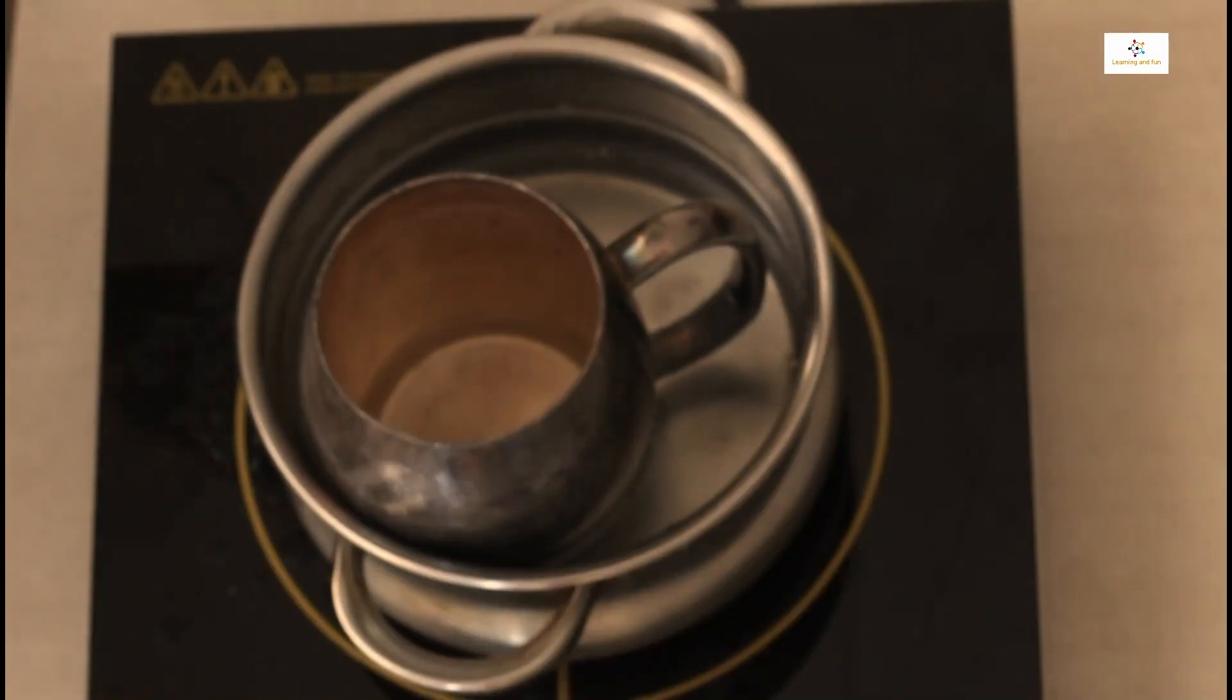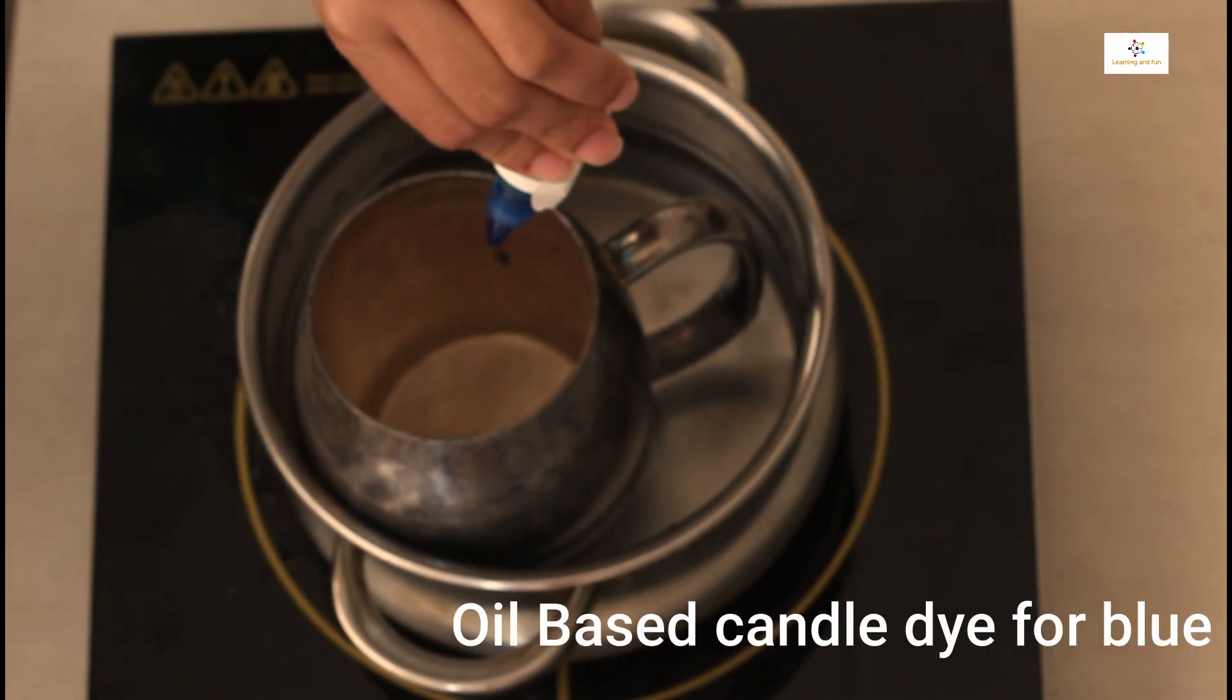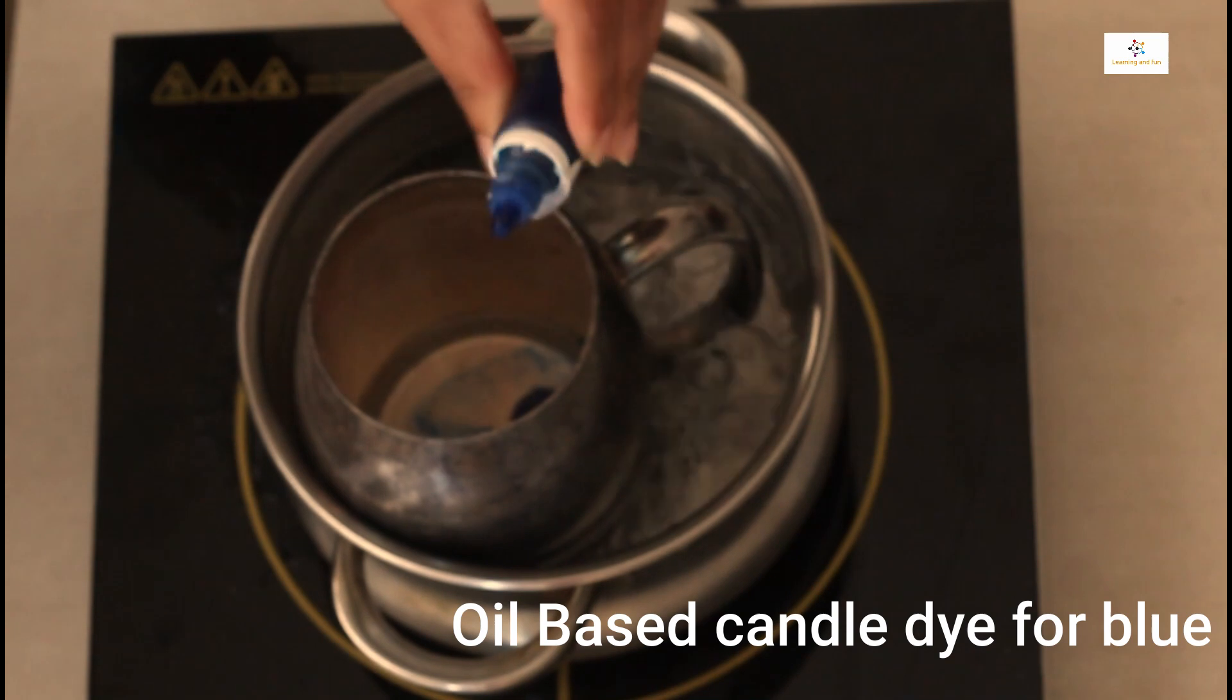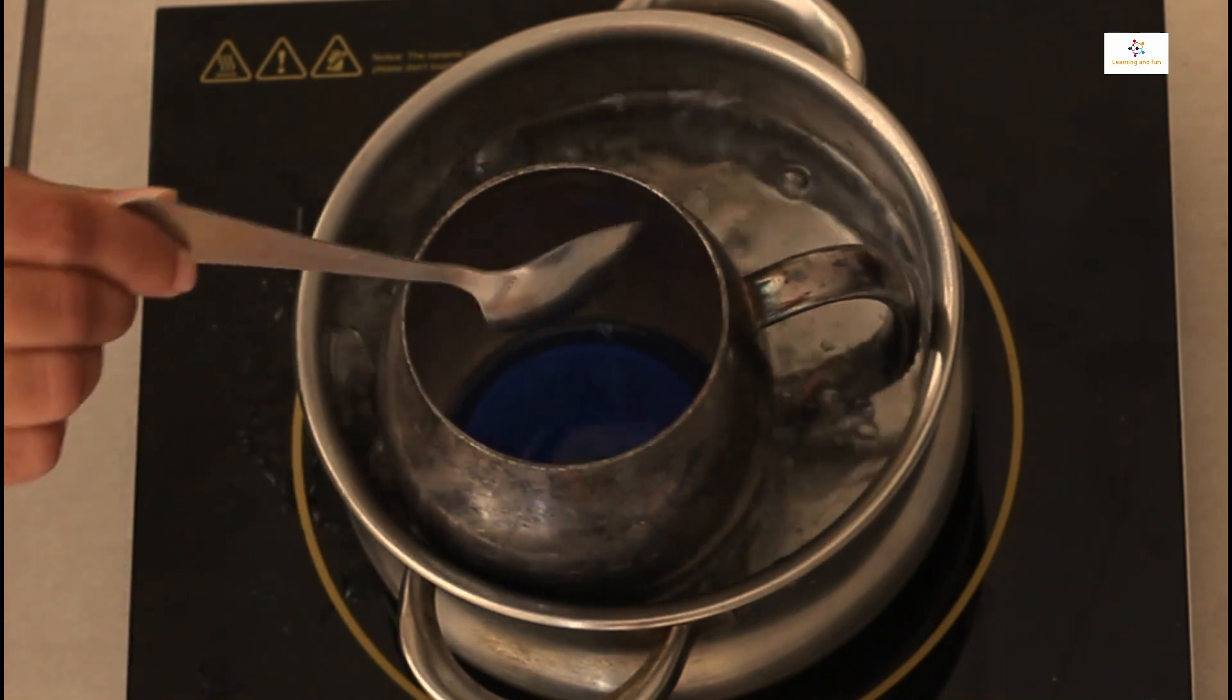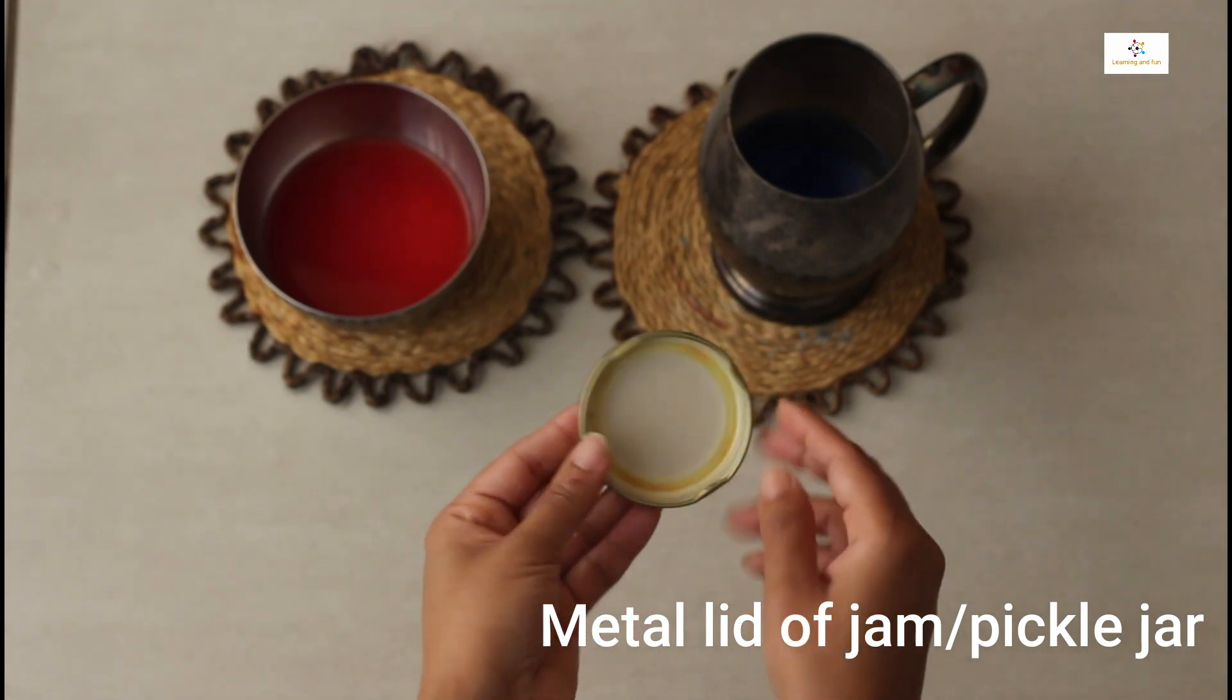Here our red color is ready. Now we are preparing the blue color, for which I'm adding the oil-based dye which we generally use for making candles. You can also use the blue crayon as we used for making the red color, but here I had the blue color so I'm using it. And here both the colors are ready.